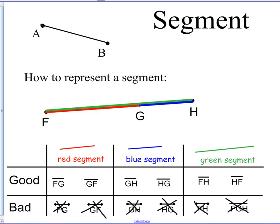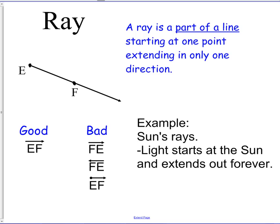Alright, and then the next shape that's like these is a ray. It's like a segment, it's like a line, but it's kind of a hybrid of the two. A ray starts at one point, but then like a line, it extends forever in one direction. So I wrote up here, it's a part of a line starting at one point, extending in only one direction.